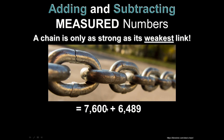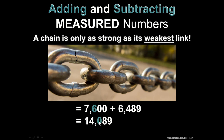If we take 7,600 and add 6,489, which number is less precise? The calculator gives one answer, but 7,600 has an implied ± 100, while 6,489 has an implied ± 1. So 7,600 is less precise, and we must round to the hundreds position. Since the digit to the right is greater than 5, we round up — standard rounding rules apply.